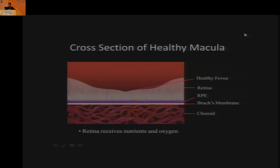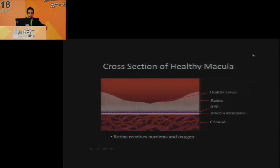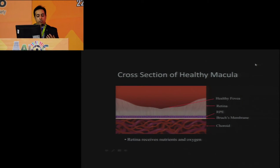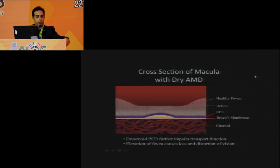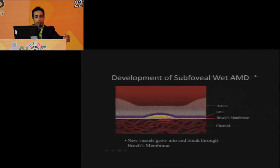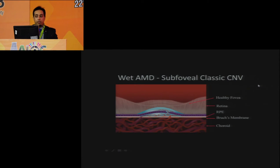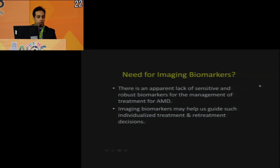Thank you, Rohit, for this interesting concept on biomarkers in AMD. In healthy macula, there is a lot of nutritional transfer across the RPE-Bruch's barrier. As aging takes place, wear and tear occur, leading to deposits of drusen, which leads to dry AMD and soft drusen, and at times leakage in vessels growing in, causing neovascular membranes responsible for visual disability.